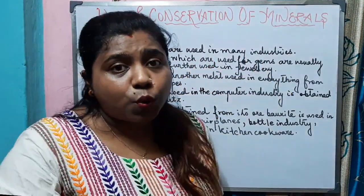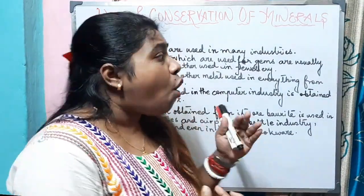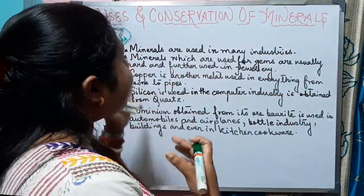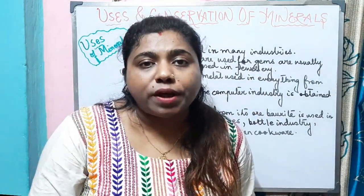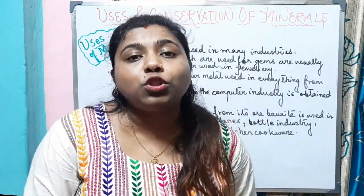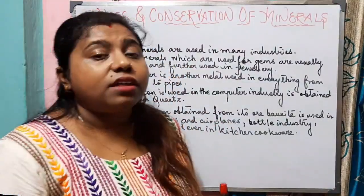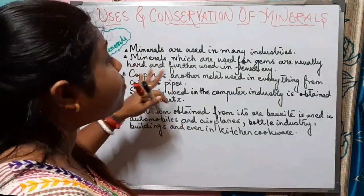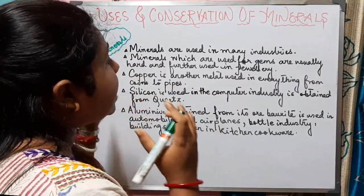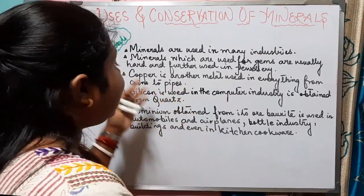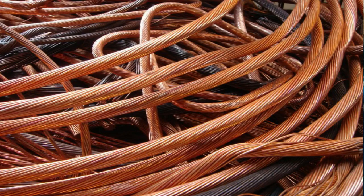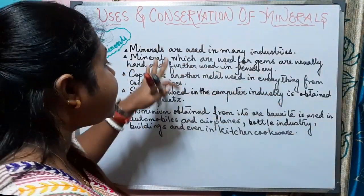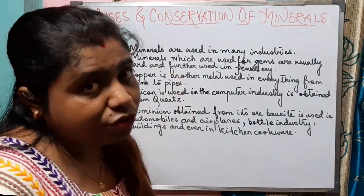The minerals which are used for gems — that means precious stones like gold and diamond — are usually hard, and they are used in jewelry. We wear gold jewelry and diamond jewelry, so all those are made up of minerals. The next important mineral is copper, which is used in everything from coins to pipes. We have copper coins, and it is used in electrical equipment everywhere.